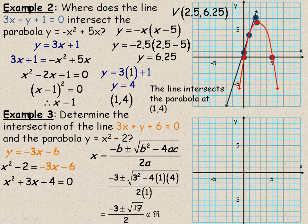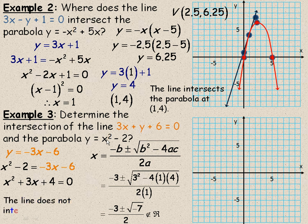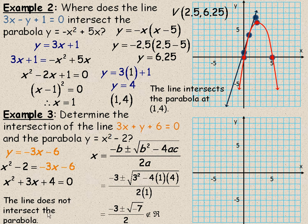Remember, you cannot take the square root of a negative value. So that's not a member of the set of real numbers. And so that means that this line does not intersect this parabola at all. So if there's no points of intersection, that's what you would state. The line does not intersect the parabola.